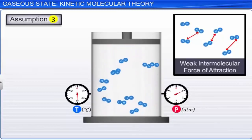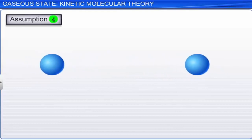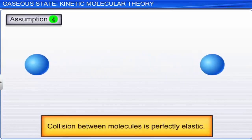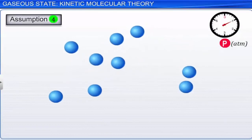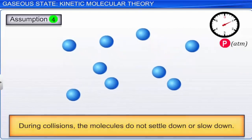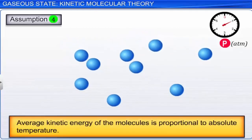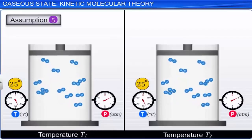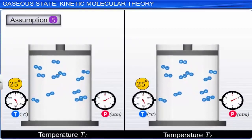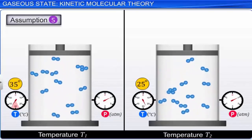Assumption 4: Individual molecules do not gain or lose energy as a result of collision; therefore, collision between molecules is perfectly elastic. This assumption can be justified because during collision the molecules do not settle down or slow down. Assumption 5: The average kinetic energy of the molecules is proportional to absolute temperature. This assumption is justified by the fact that when the temperature of a gas is raised, the molecules start moving faster, their individual kinetic energies increase, and hence the average kinetic energy increases.